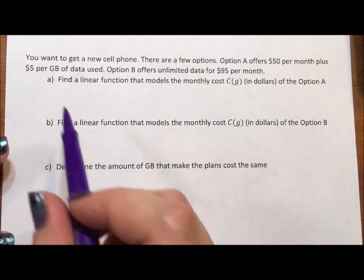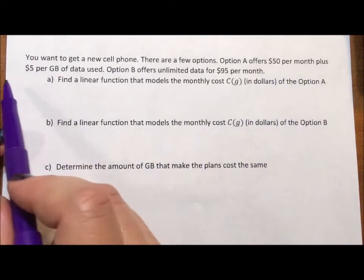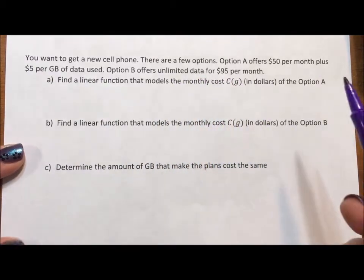Okay, you want to get a new cell phone. There are a few options. Option A offers $50 per month plus $5 per gigabyte. Option B offers unlimited data for $95 a month.